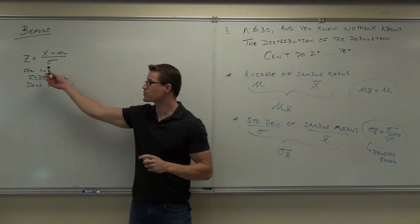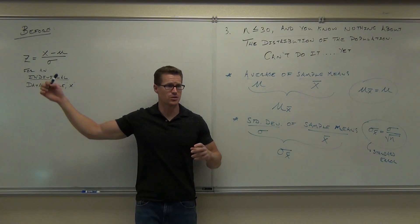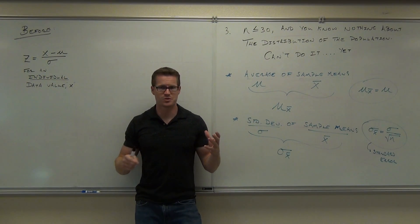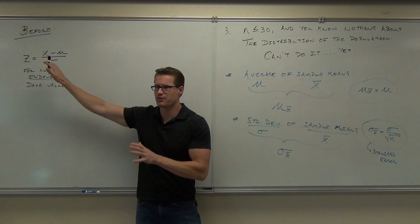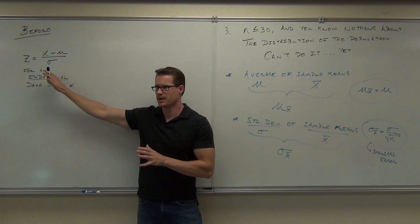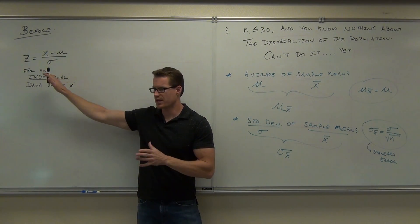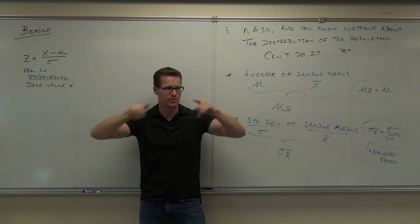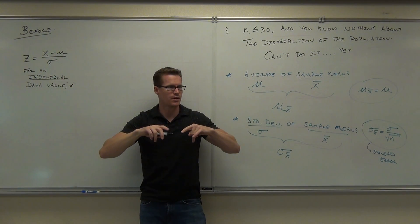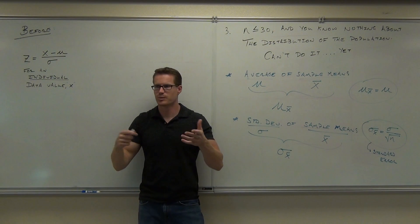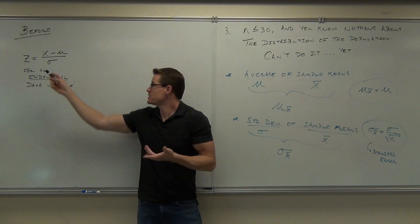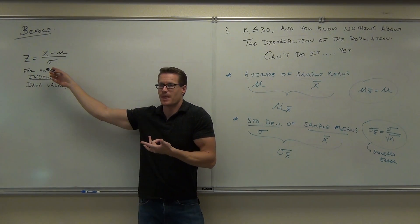In order to find a z-score, the only reason you'd ever find a z-score is to use a standard normal distribution. Remember the table you've been working with? It's a standard normal distribution. The only reason why you do that is to work with it.